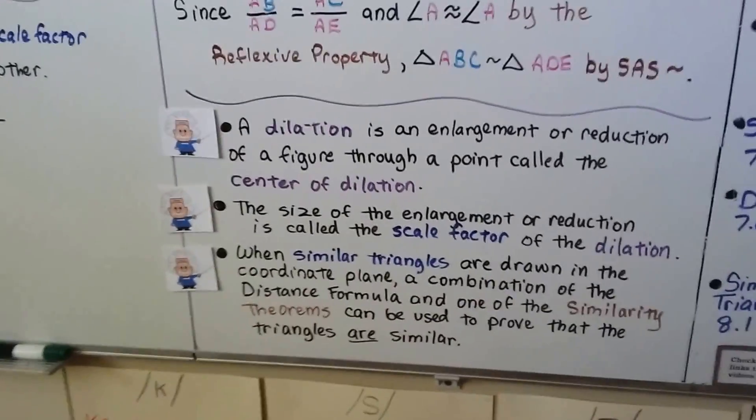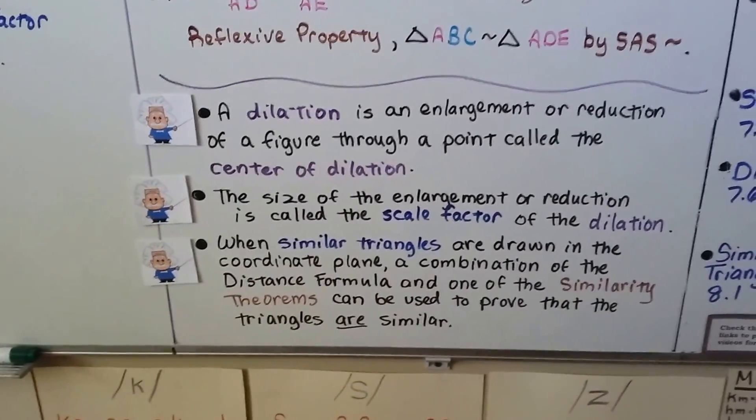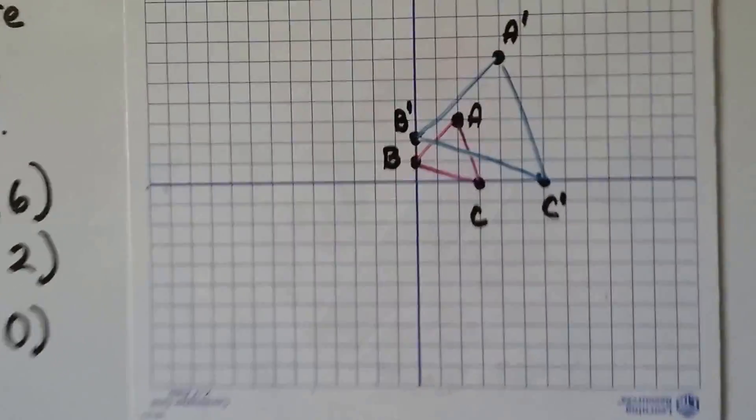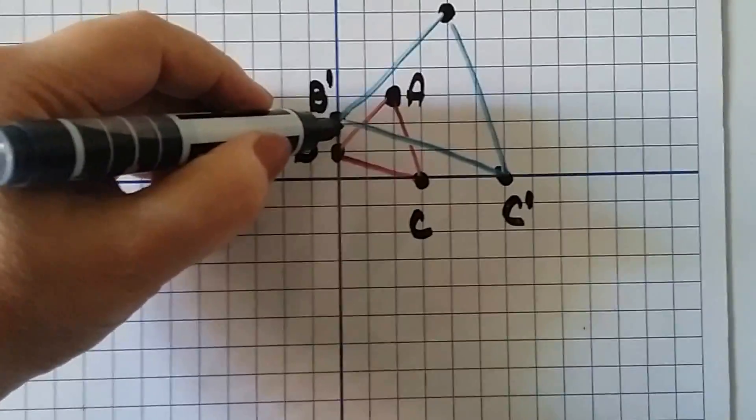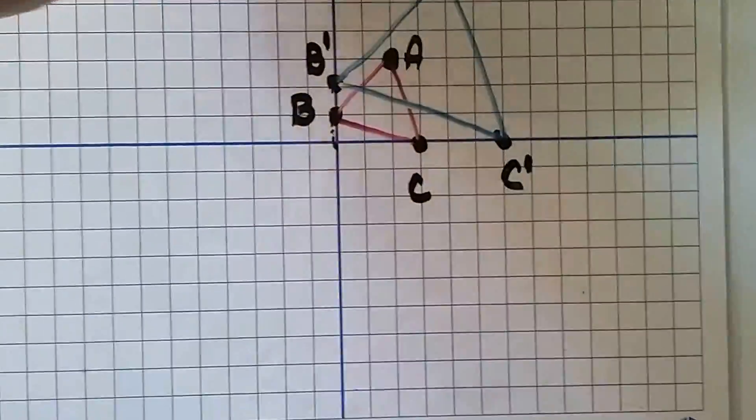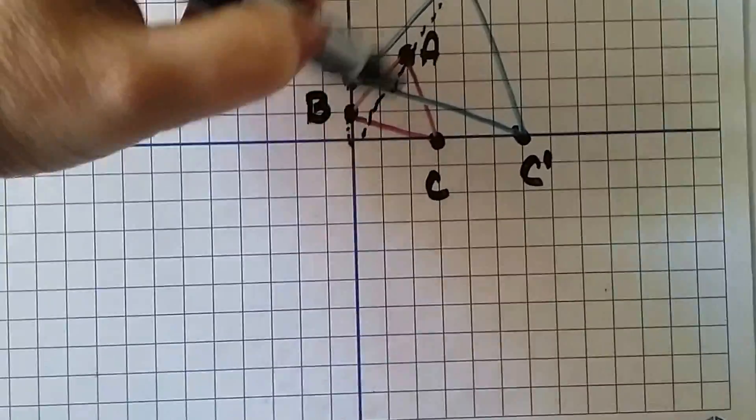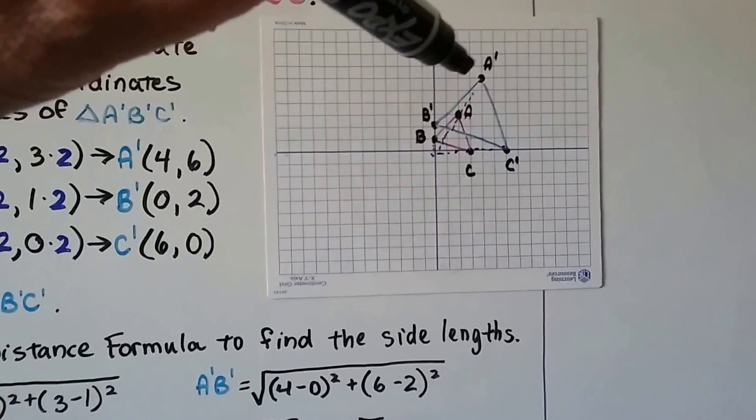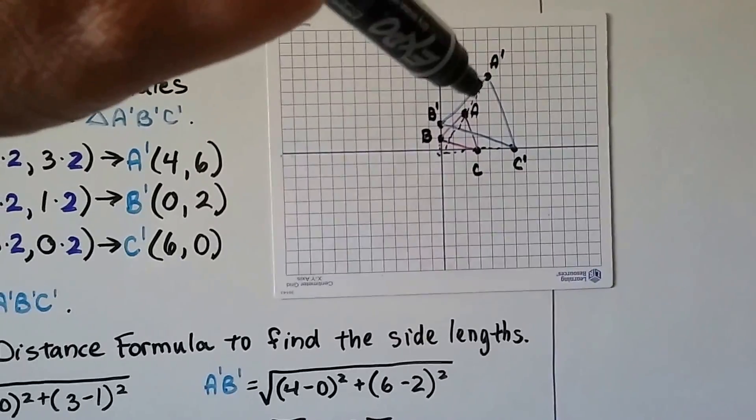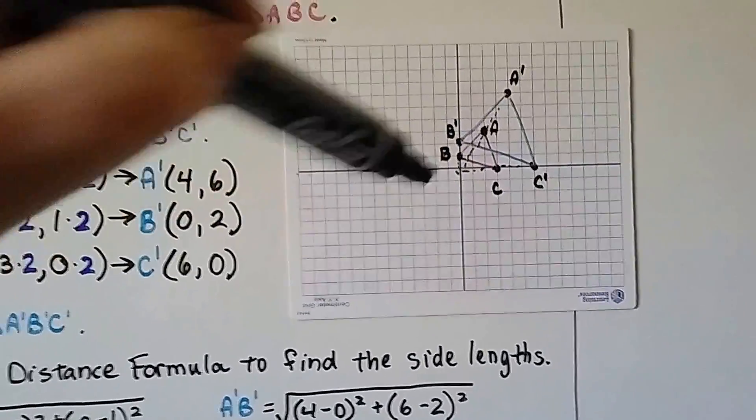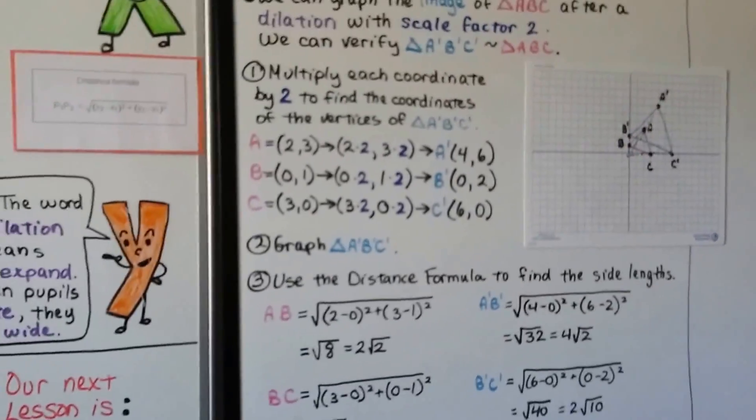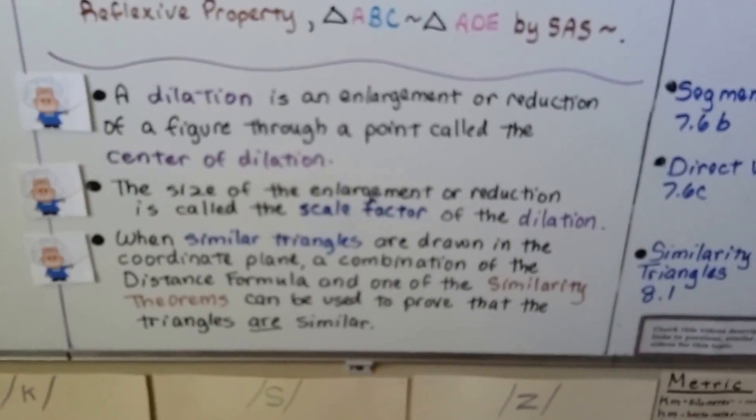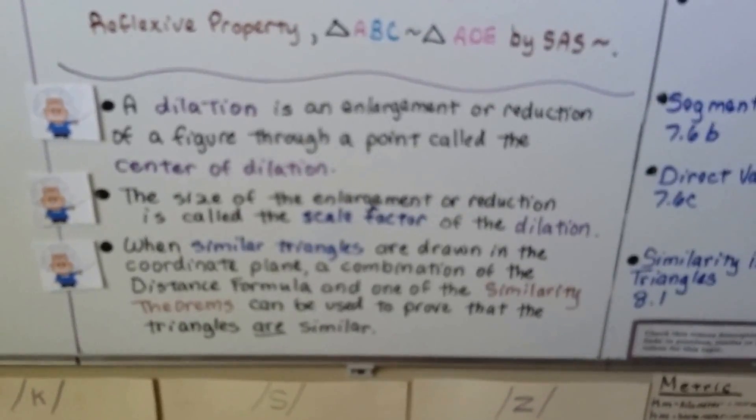A dilation is an enlargement or reduction of a figure through a point called the center of dilation. You can find the center of dilation by connecting their points to see where they meet. For all the examples in this video, our center of dilation was the origin (0,0). It's like a vanishing point in drawing. The size is called the scale factor of the dilation.